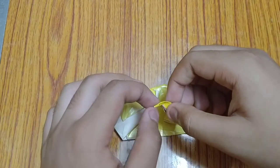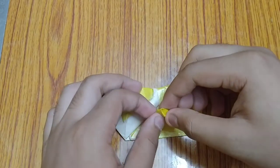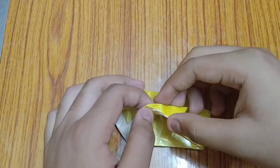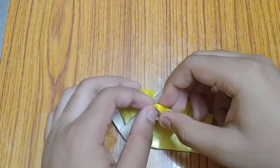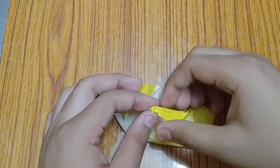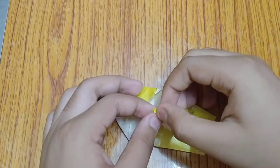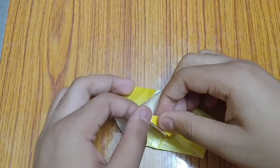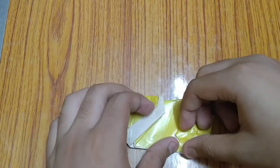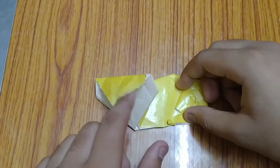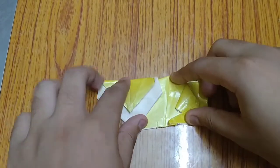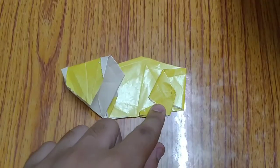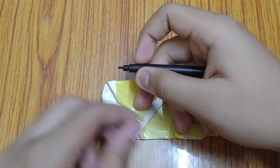Now open this and fold this one like this. This will be inwards. So it seems that our lion is ready. Now take the black, now friends take the black sketch pen and